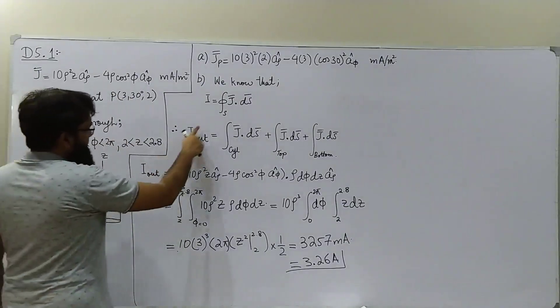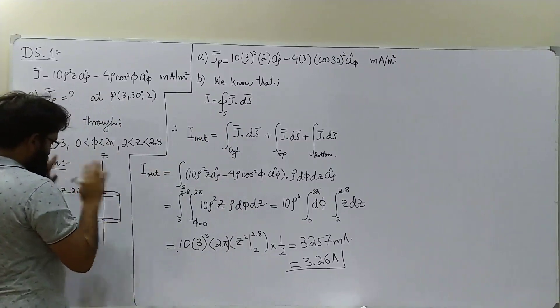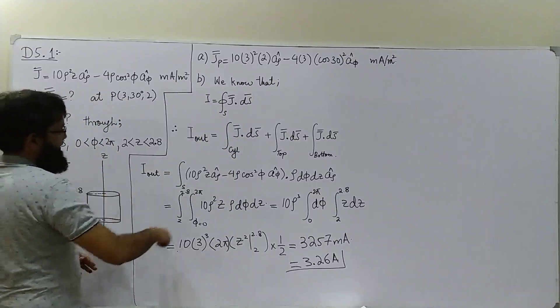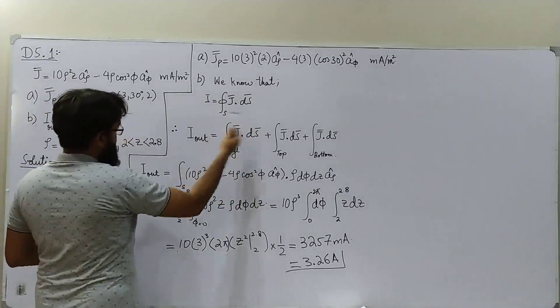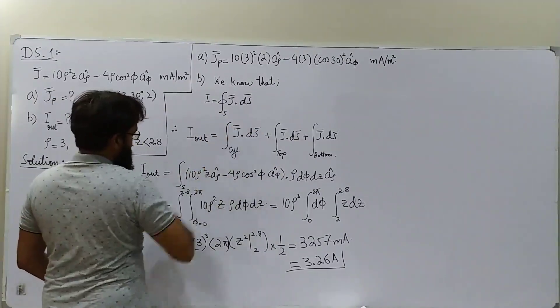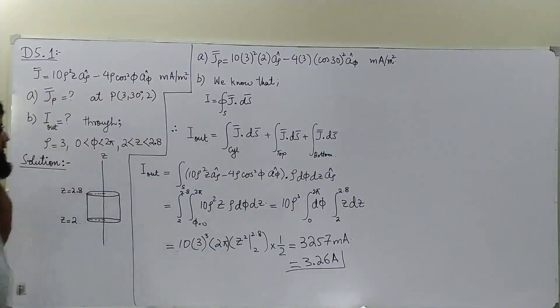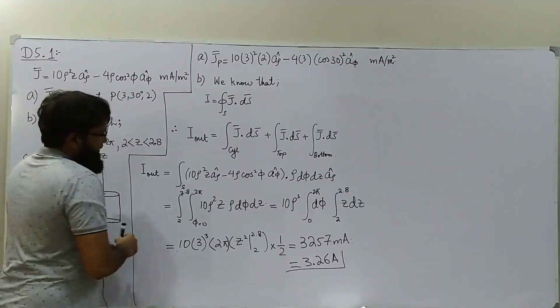We know that this closed surface has got a circular cylindrical region, top region, bottom region. So this integral—since for each region the value of ds, the formula for ds will be changed—we have to break this closed loop integral into three open surface integrals.